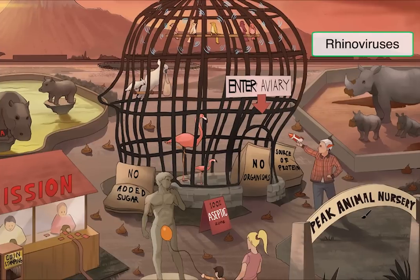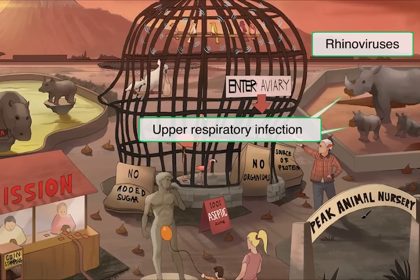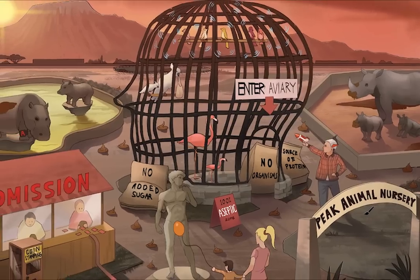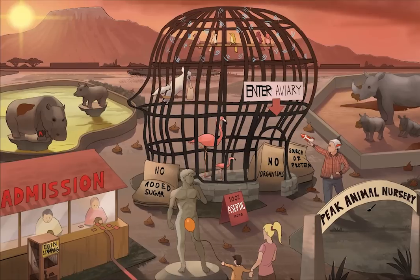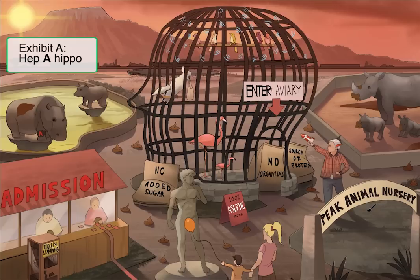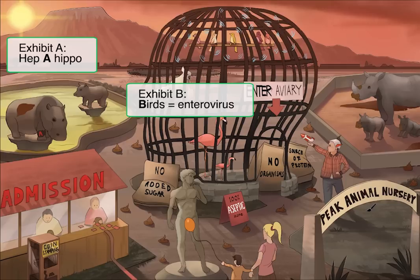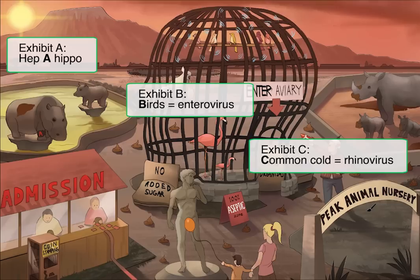And finally, we have our rhinos, which represent rhinovirus. Rhinovirus is the primary cause of the common cold. One notable difference is that rhinovirus isn't transmitted fecal-orally — it's actually respiratory transmission, which makes sense since it causes a respiratory infection. We've drawn mud on the rhino's faces to symbolize a runny nose, signifying that it causes a URI. Think of the three exhibits as A, B, and C: exhibit A for hepatitis A hippo, exhibit B for birds representing enteroviruses, and exhibit C for the common cold rhinos. Now that we're done with the overview, let's go into more detail with each member of the picornavirus family.